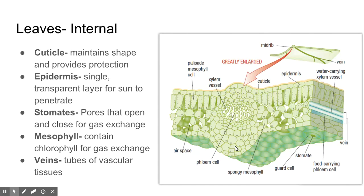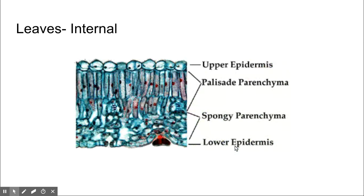Internally, a leaf looks like the picture here on our right. We have the cuticle, which allows it to maintain its shape and provide protection. We have epidermal cells, which are a single layer of cells and transparent, allowing the sun to penetrate into the cells that contain chlorophyll molecules. We have stomates, which are little pores that open and close for gas exchange. The mesophyll contains the cells which have chlorophyll, where gas exchange and photosynthesis takes place. Then we have our veins, which are tubes of vascular tissues that run through the leaf. This is a microscope picture of our epidermal cells on the upper and lower side, and our parenchyma cells which form that middle layer.